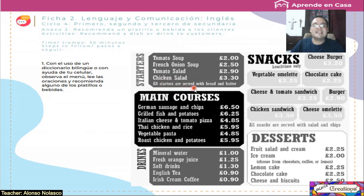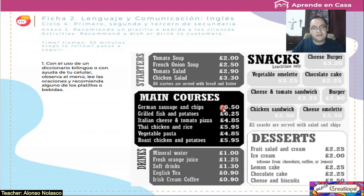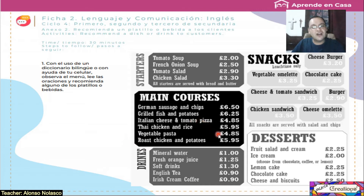Now, main courses — platillos principales. German sausage and chips: six fifty pounds. Grilled fish and potatoes: six twenty-five pounds. Italian cheese and tomato pizza: four eighty-five pounds. Thai chicken and rice: five ninety-five pounds. Vegetable pasta: four eighty-five pounds. Roast chicken and potatoes: five ninety-five pounds.